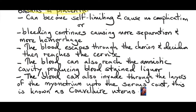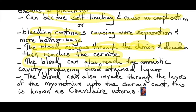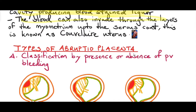There are two possibilities. Either the bleeding will stop and cause no complications, or the bleeding will continue and cause more separation and more hemorrhage. The blood can then escape through the chorion — the outer membrane of the amniotic sac — and will reach the cervix, presenting as pervaginal bleeding. Or it can be a concealed abrupta placenta. The blood can also reach the amniotic cavity and produce blood-stained liquor.